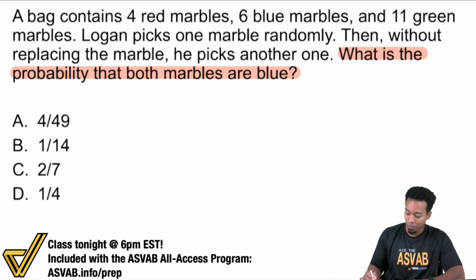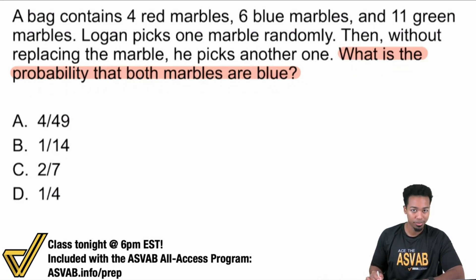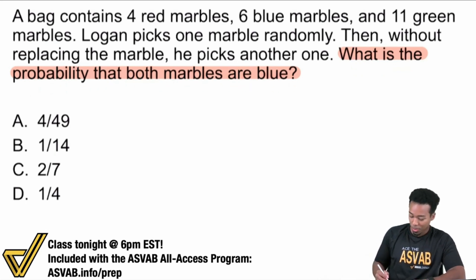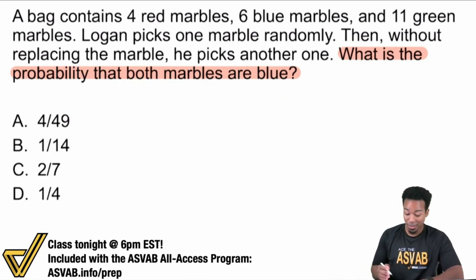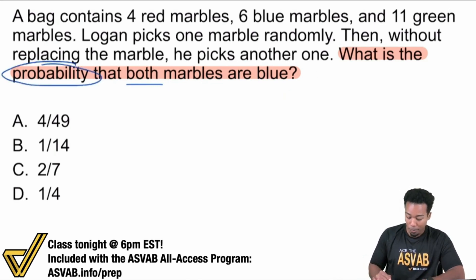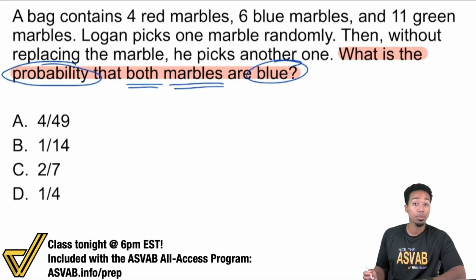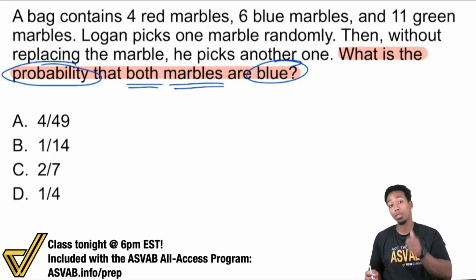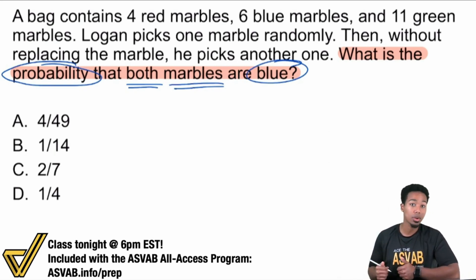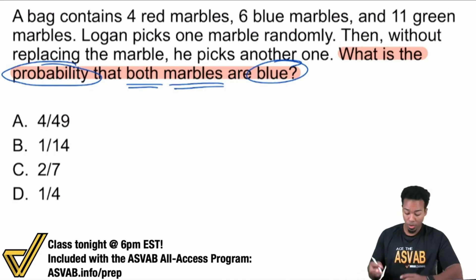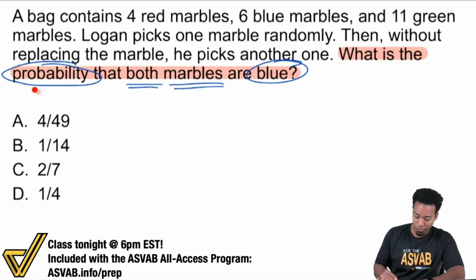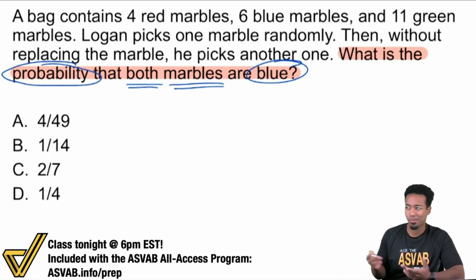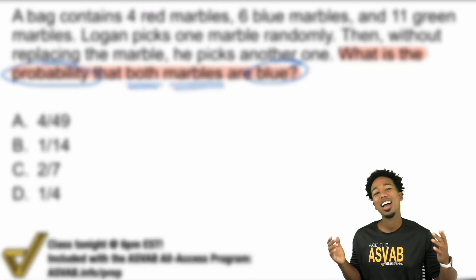With that said, the question is: what is the probability that both marbles are blue? We have some heavy keywords here. We have probability, and both marbles are blue. This is a dead giveaway in terms of what math we're doing and exactly how we're going to calculate this. It says probability first and foremost — we can all agree that probability is a math word.